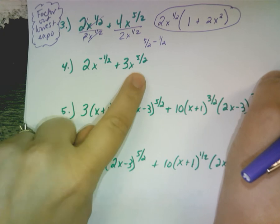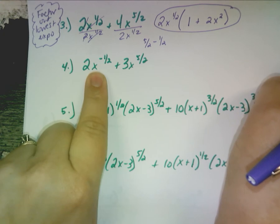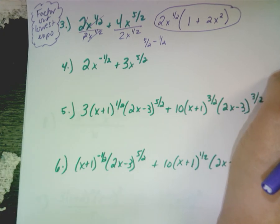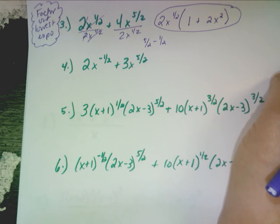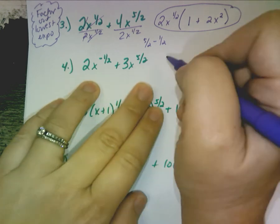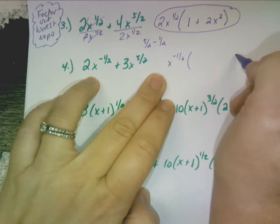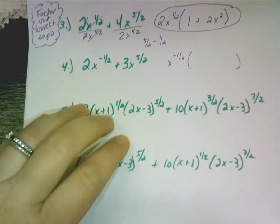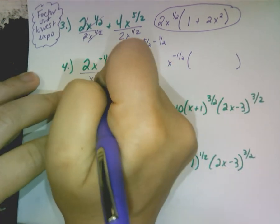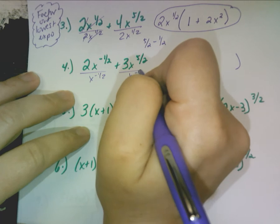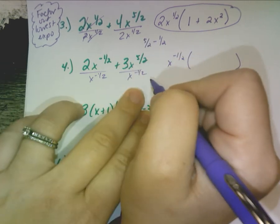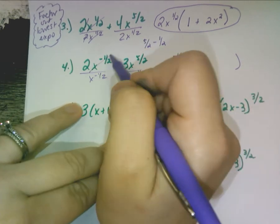I threw in a negative. What do you think you're going to do here? Same thing, except you're going to factor out a negative one half because that is the lowest. You always want to factor out the lowest exponent. So I'm going to factor out an x to the negative one half. Watch this one now. Again, you're dividing by negative one half.